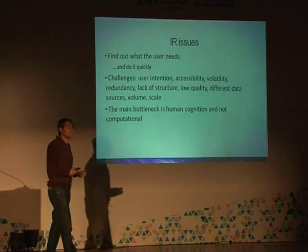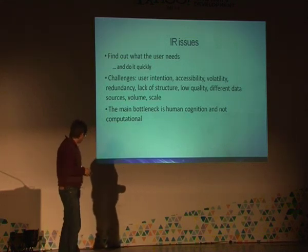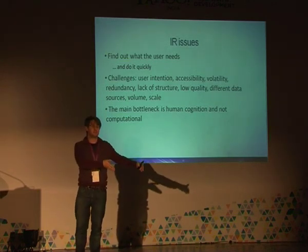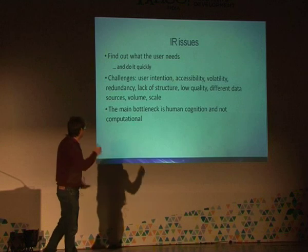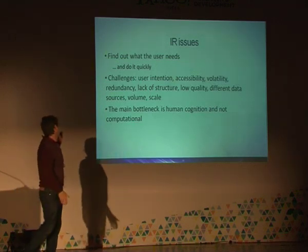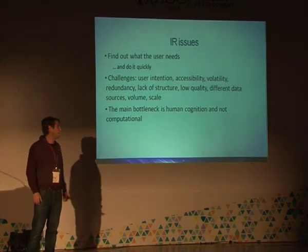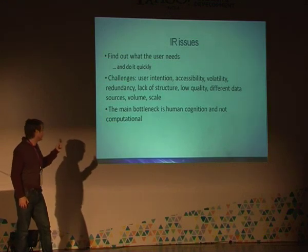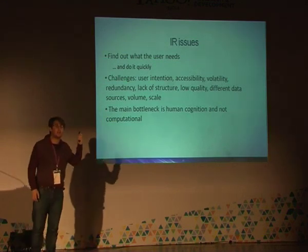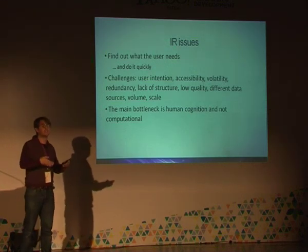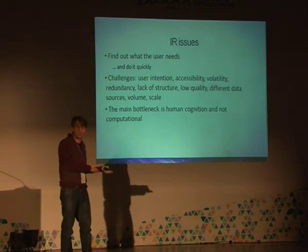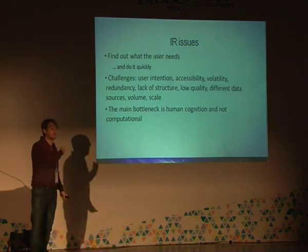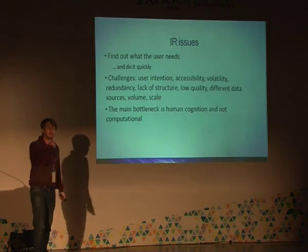Scale means that if you put more machines, you can handle more resources. Prabhakar Raghavan used to say the main bottleneck is still human cognition — it's not computational, it's understanding how we think. This is why semantic search might be interesting, because it might bring us one step closer to being able to figure out what we're thinking or looking for.